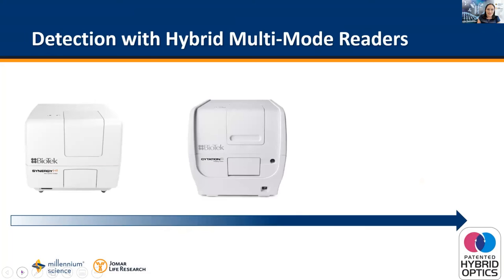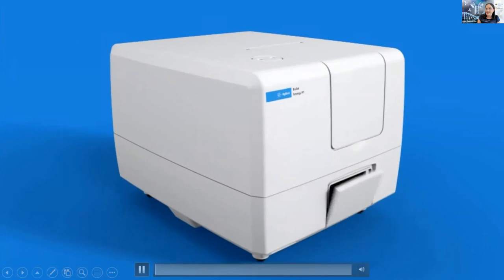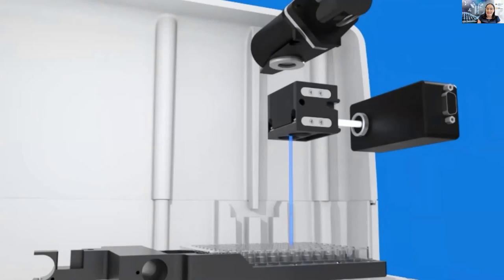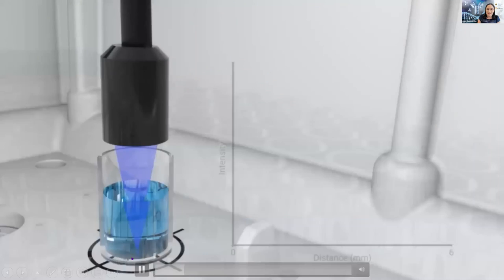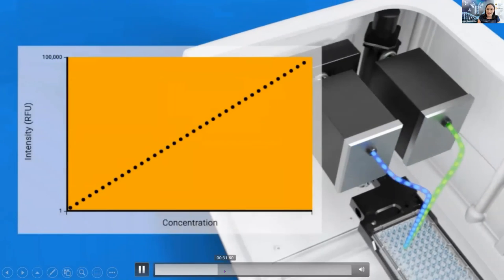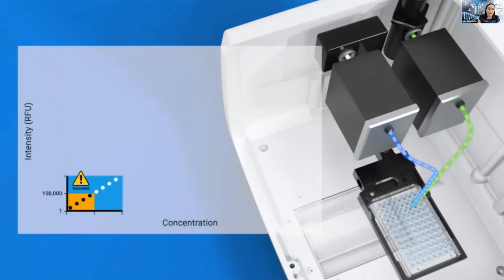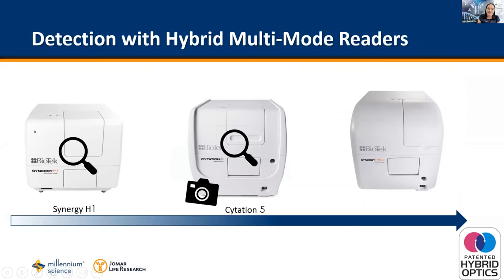There are three hybrid multi-mode readers in the BioTek range: the Synergy HT, the Synergy H1, and the Synergy Neo2. Looking under the hood: the Synergy H1 has all the flagship detection features with an additional level — the new cube design — allowing greater application flexibility and speed, optimal Z-height reading and detection, and extended dynamic range for ultra-sensitivity.